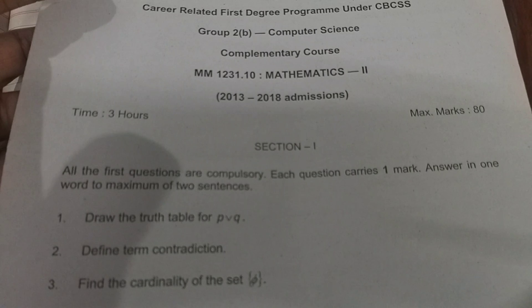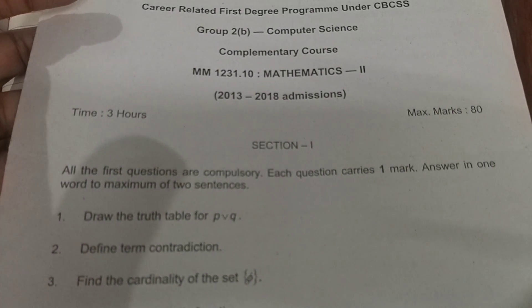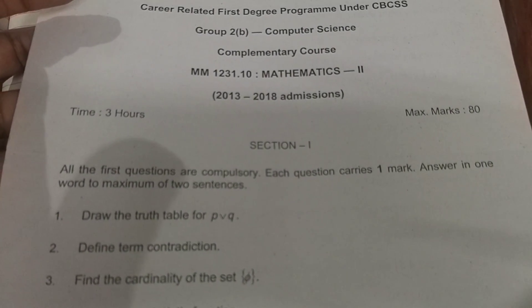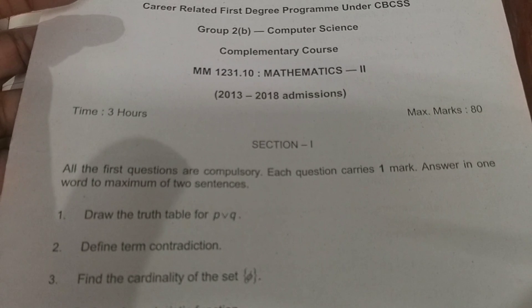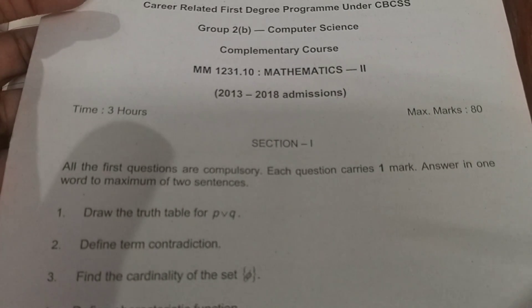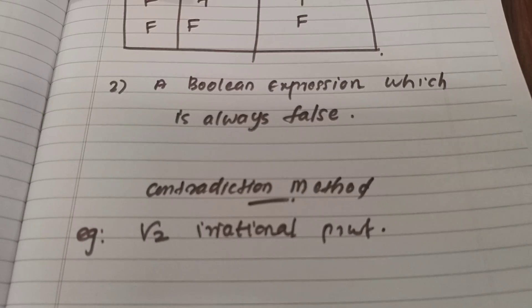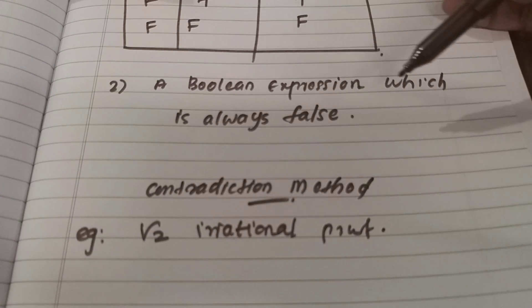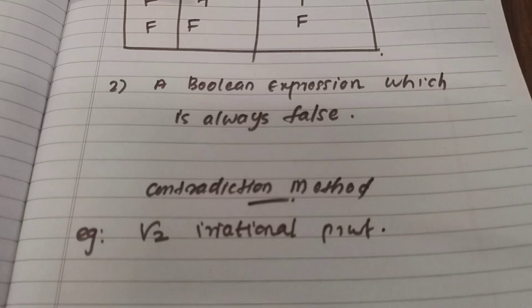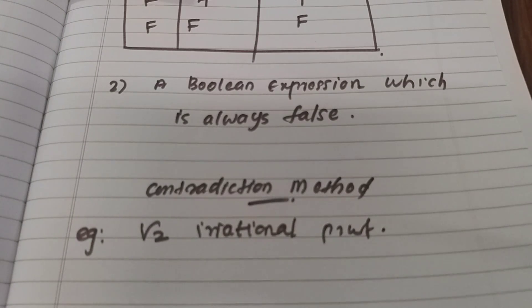The next question is to define the term contradiction. A contradiction is a Boolean expression which is always false. The final answer is false.